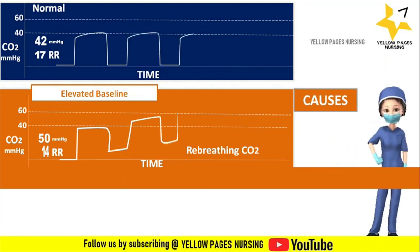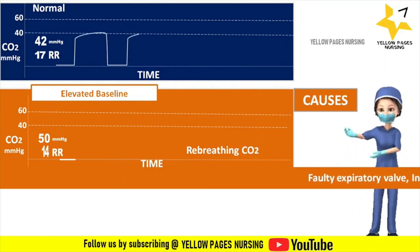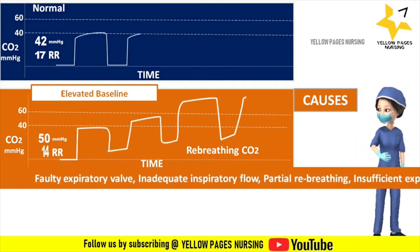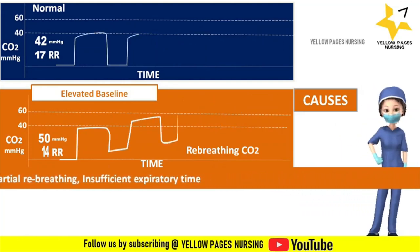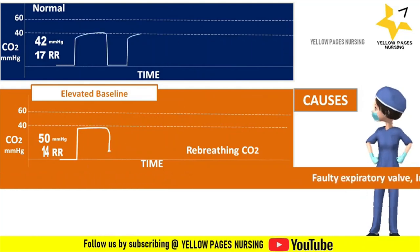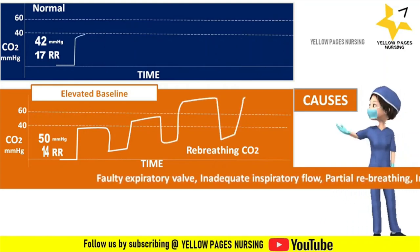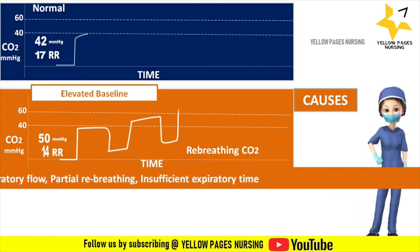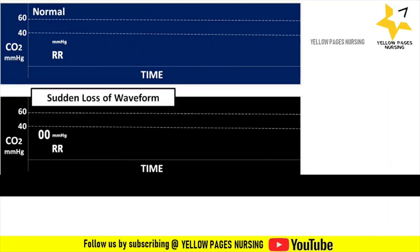The causes of the shark's fin pattern include kinked or occluded artificial airway, foreign body in the airway, obstruction in the expiratory limb, and conditions like asthma and COPD. In the waveform with elevated baseline, there is elevation at the baseline indicating incomplete inhalation or exhalation where CO2 is not completely washed out. Possible causes include a faulty expiratory valve, inadequate inspiratory flow, partial rebreathing, insufficient expiratory time, and rebreathing CO2 due to a fault in the ventilator circuit.